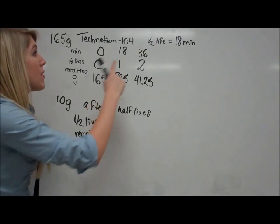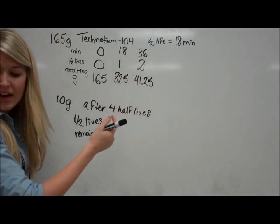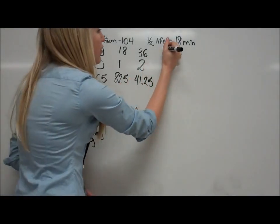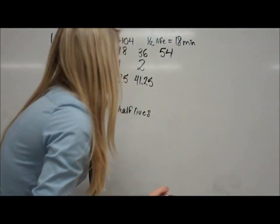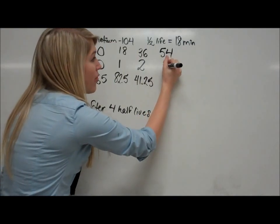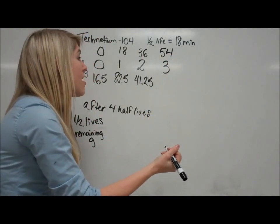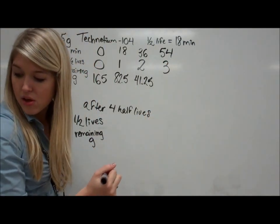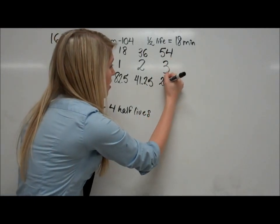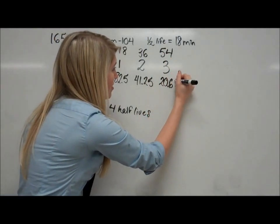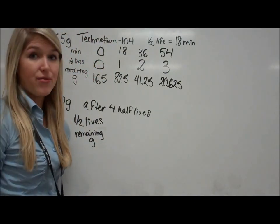We've got to keep going to get to 90. So adding another 18 gets us to 54. So now we're at 54 minutes, we've had three half-lives happen. And now we have 20.625 grams left.